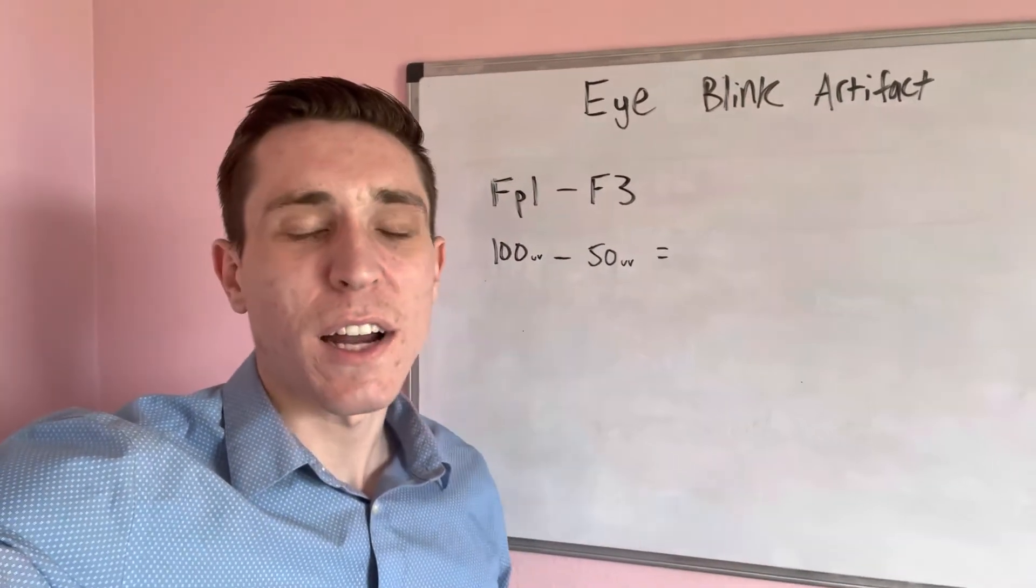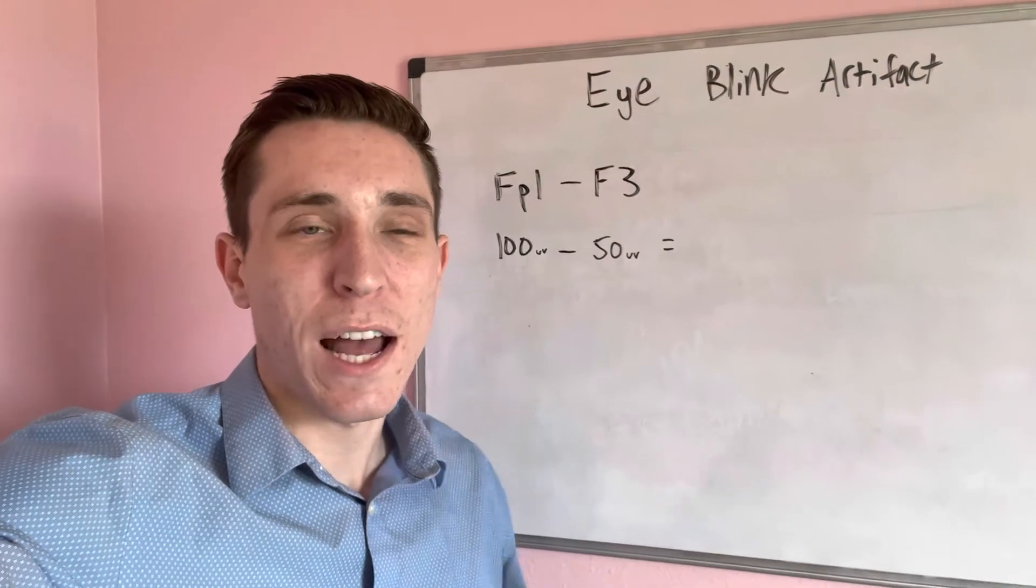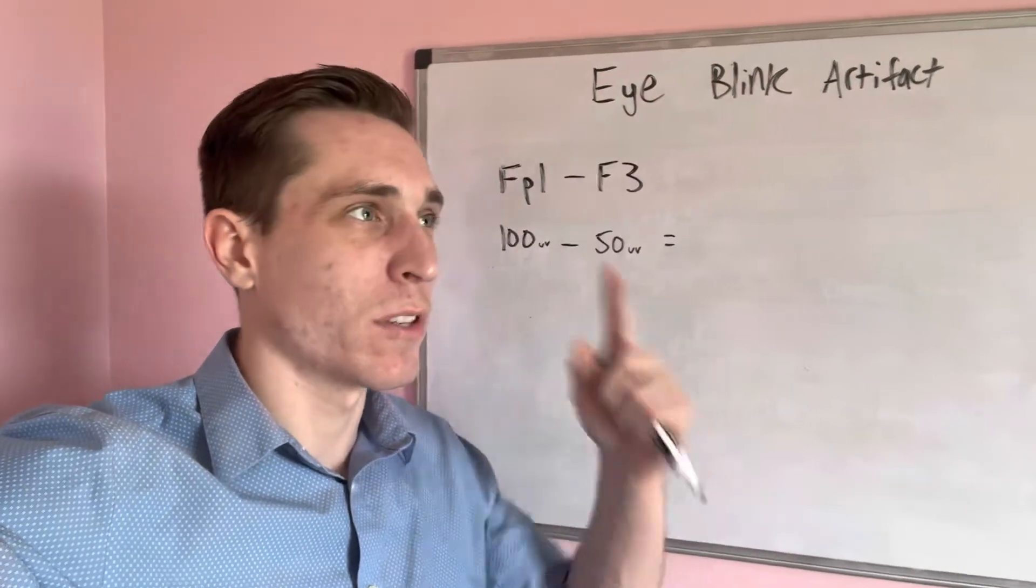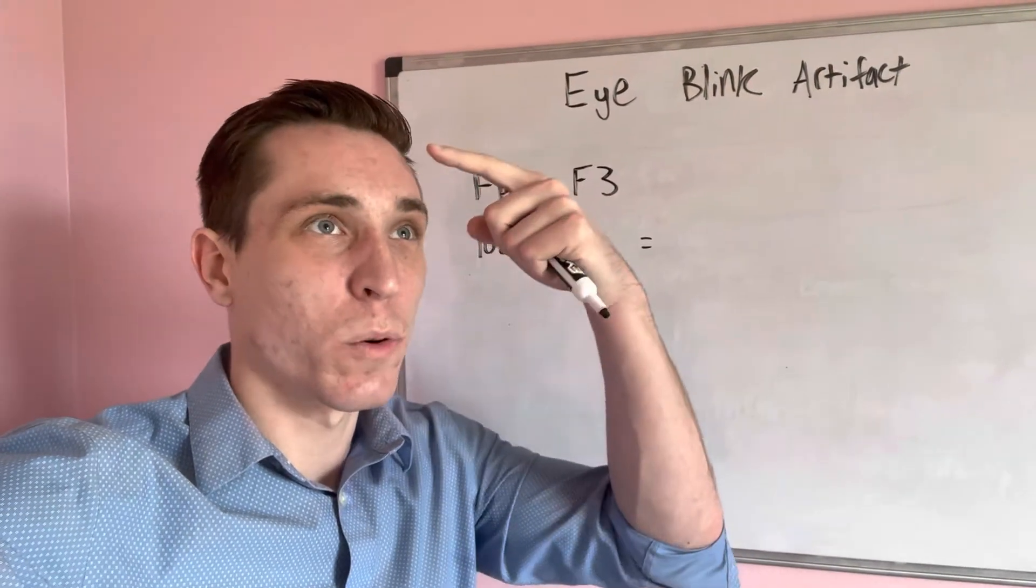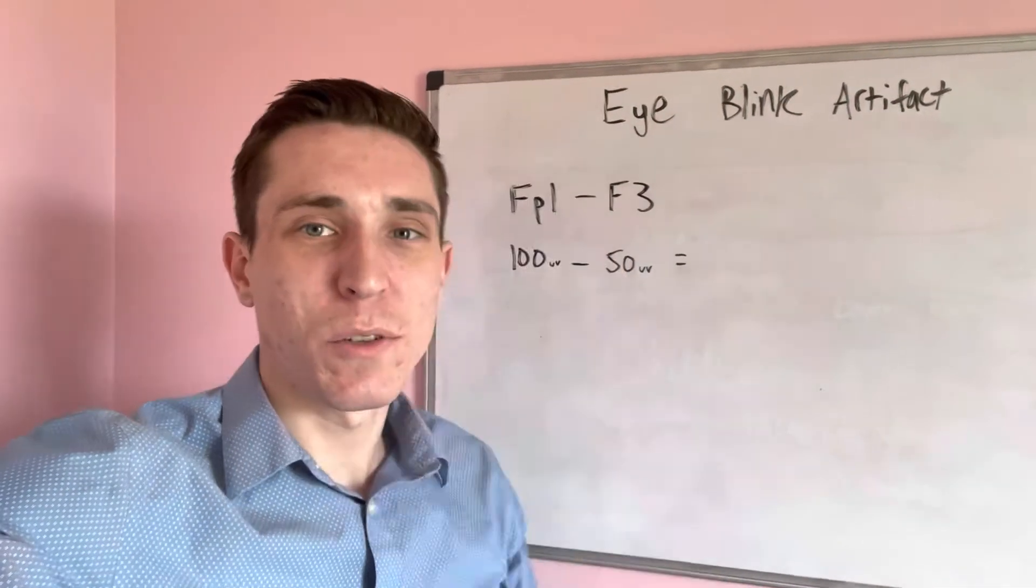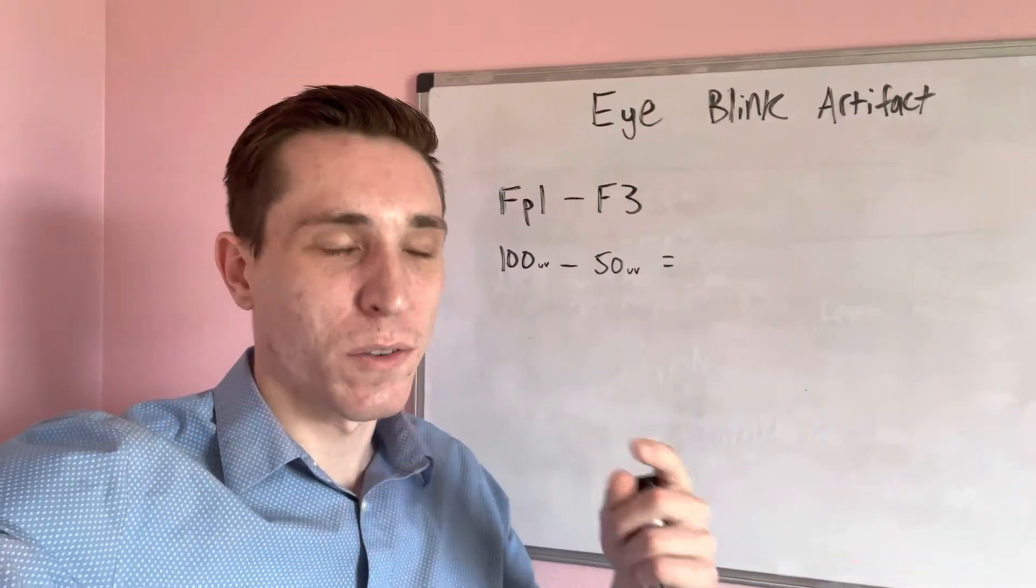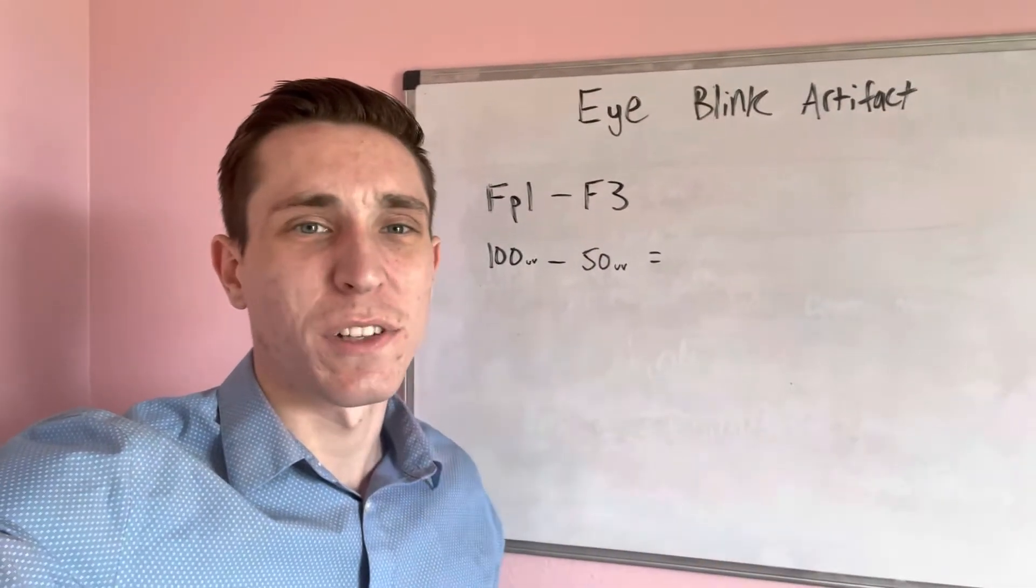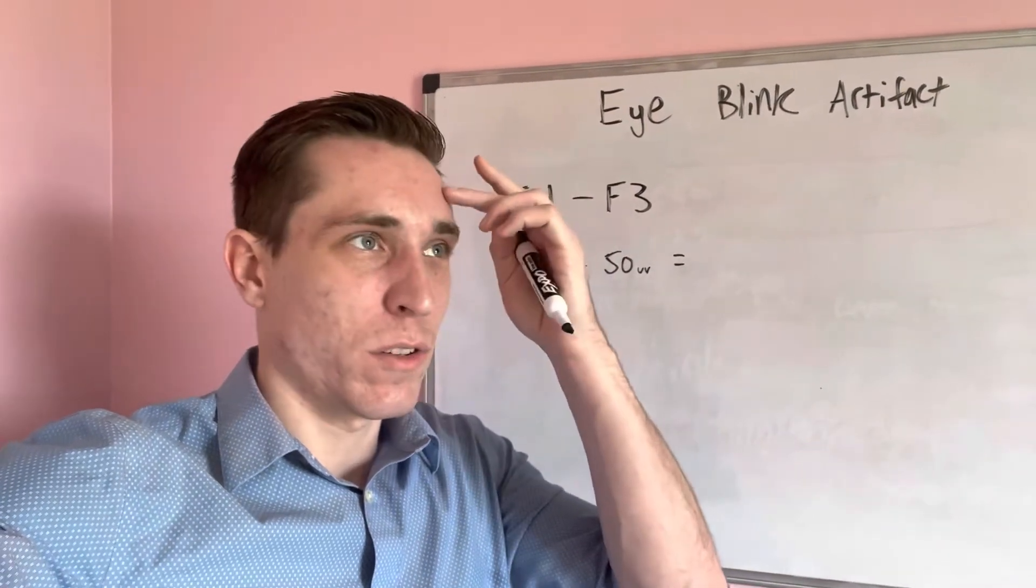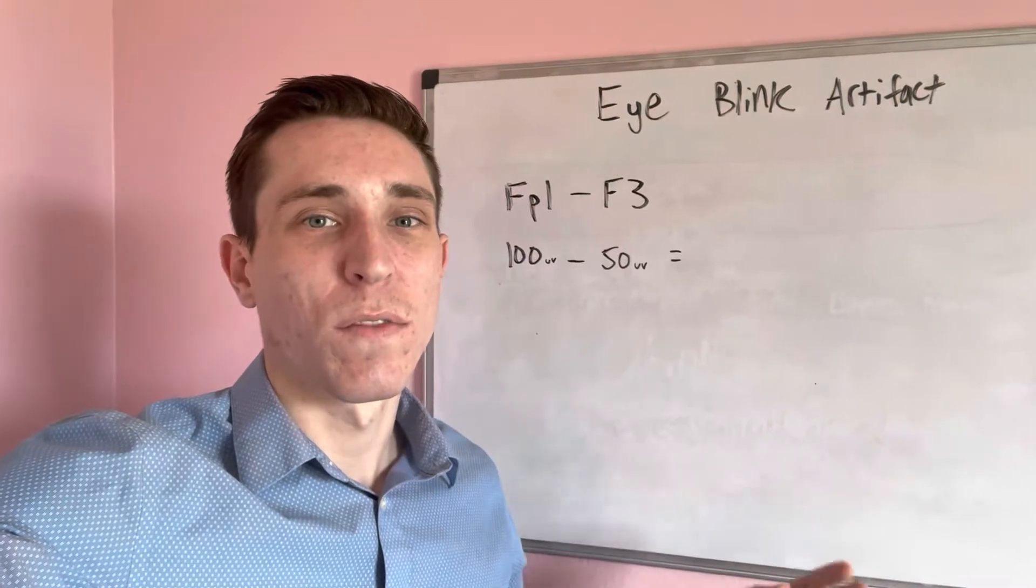When you blink your eye, when you close your eyes, your eyeball goes up. Your eyeball goes up and points towards these electrodes on your forehead, FP1 and FP2. Your eyeball goes up when you blink and goes towards those electrodes. So these two electrodes will pick up the most of the eye blink artifact.